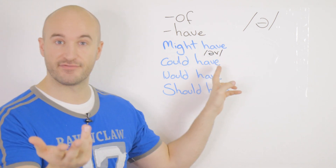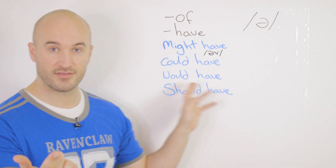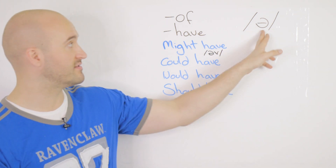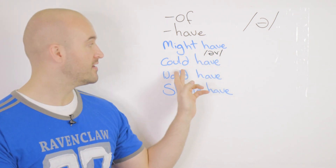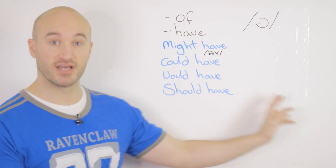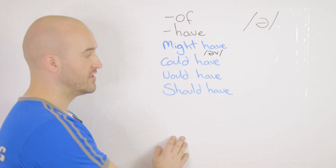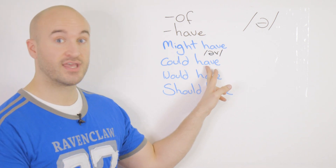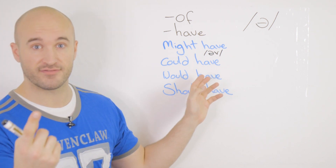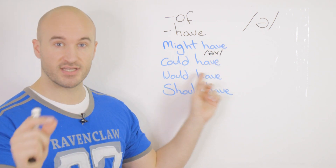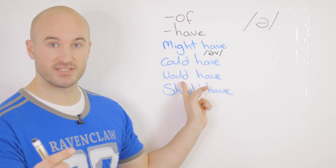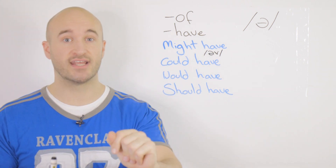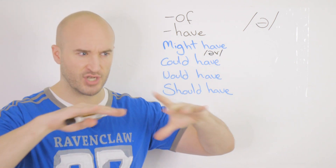You might also hear the contraction reduced even further to just the schwa: might have, could have, would have, should have — and all other modal verbs with 'have'. In the negative, the same rules apply. So 'couldn't have' can reduce to 'couldn't've' or just a schwa: couldn't have, wouldn't have, shouldn't have. This is very common in fast spoken English — not written English and definitely not formal, slow, clear speech.